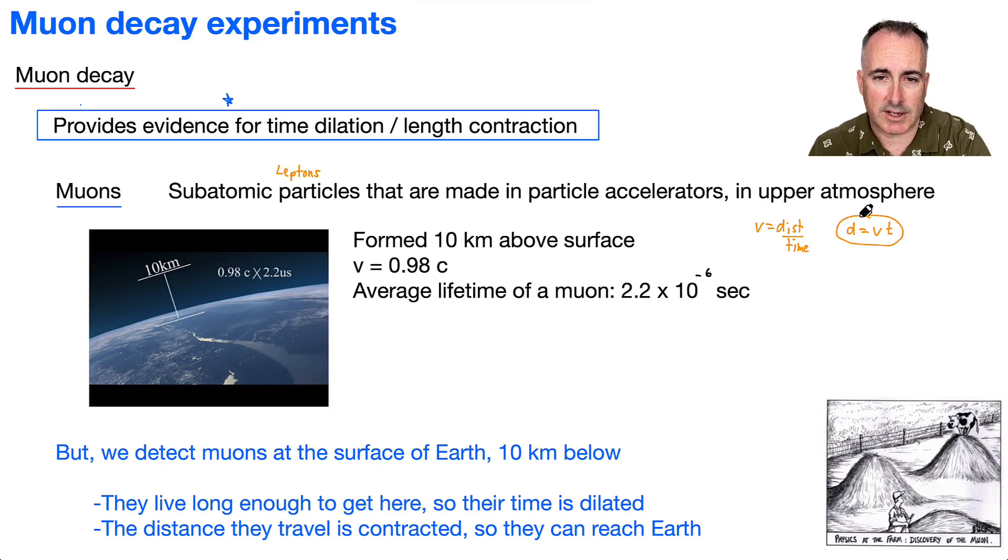That's really all we need. So D is going to equal, let's see, V the speed of this muon, so that's 0.98 times the speed of light. Remember, the speed of light in a vacuum is 3 times 10 to the 8 meters per second. All that times the lifetime of this thing, which is 2.2 times 10 to the minus 6 seconds.